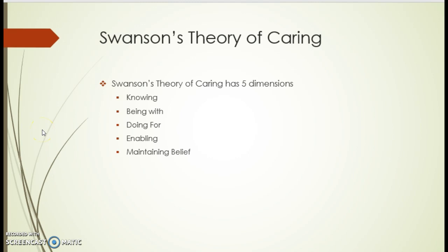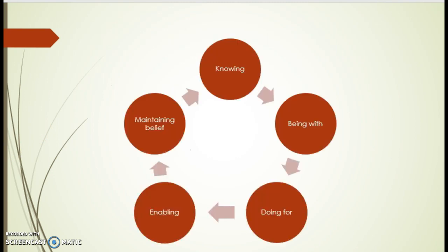Swanson's theory has five dimensions: knowing, being with, doing for, enabling, and maintaining belief. We will now take a closer look at the five dimensions.